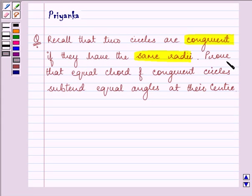Now here we need to prove that equal chords of congruent circles subtend equal angles at their center. So let us start with our solution.